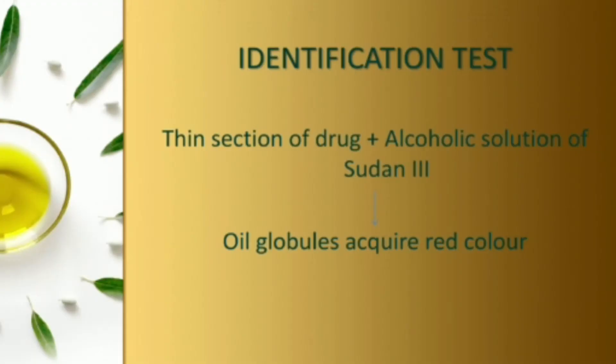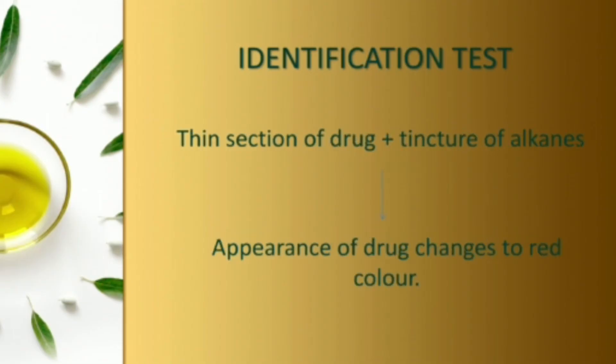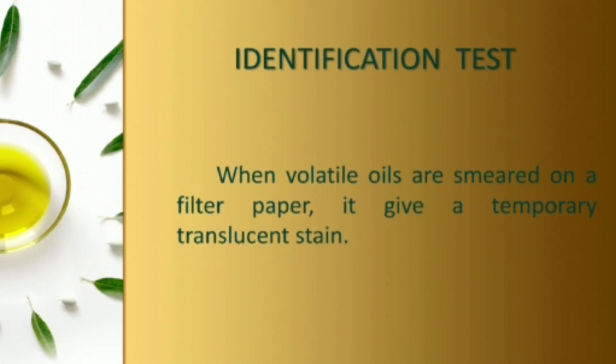For identification tests: first, take a thick section of the drug containing volatile oil and treat it with an alcoholic solution of Sudan III — under the microscope, oil globules will appear red. Second, use tincture of alkanna on the drug section — the oil turns red in color. Third, place a filter paper on the volatile oil — it leaves a stain, but unlike fixed oils, the stain disappears as the volatile oil evaporates.